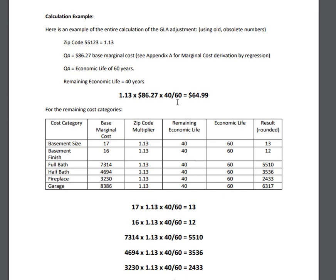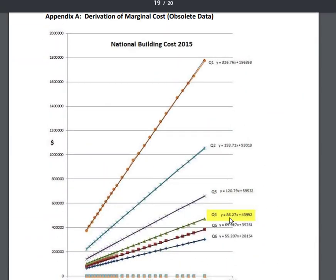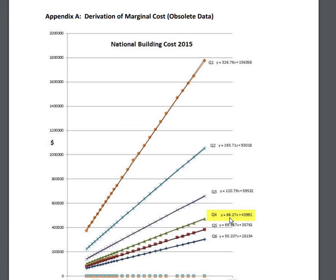Where does the 8627 come from? Let's go back to Appendix A of the user manual. 8627 is the marginal cost of GLA. Marginal cost is a term used in financial accounting for the cost of one more unit of production — in this case, one more square foot of GLA. Solomon calculates marginal cost by using regression. Each of these plots represents a different quality rating. The cost of GLA for a Q4 is $43,992 plus $86.27 per square foot; a Q3 is $59,532 plus $120.79 per square foot. If the house is a Q4, start with 8627.